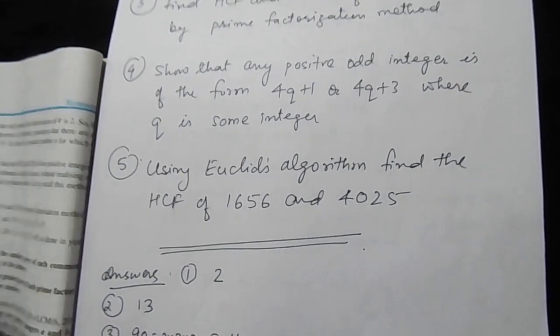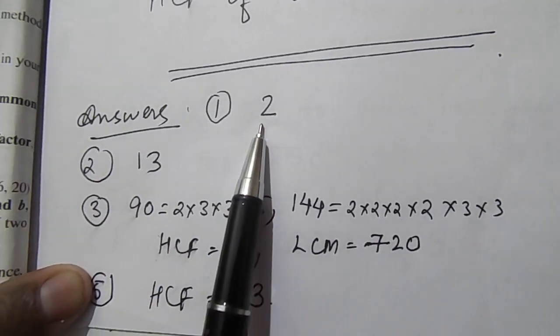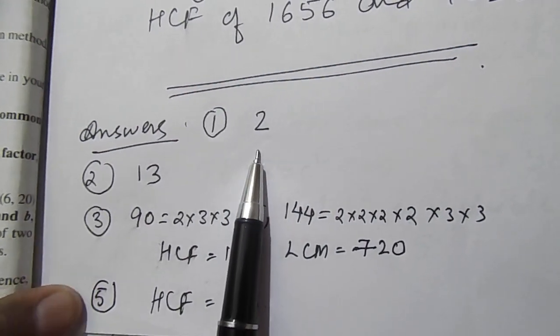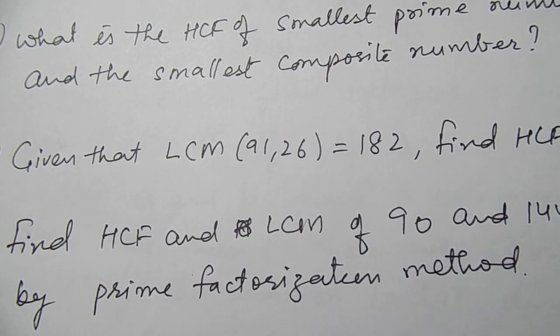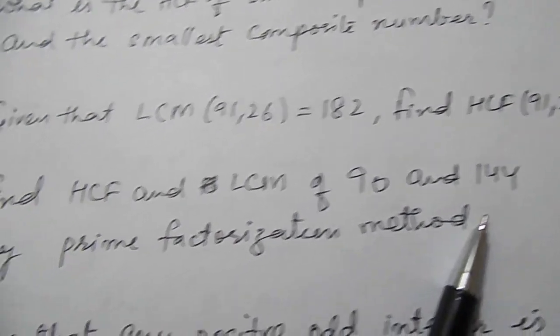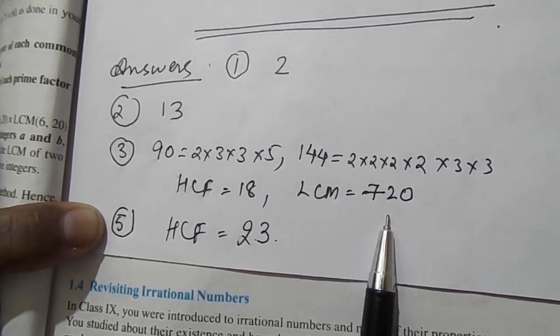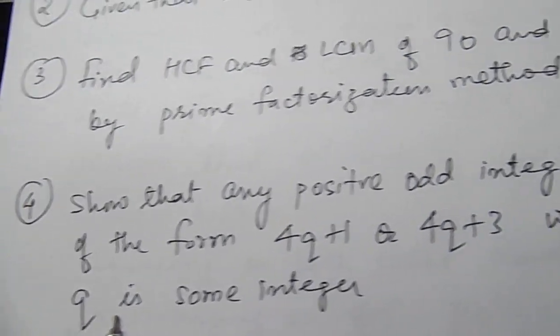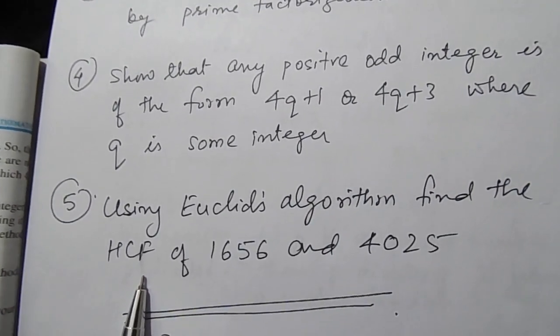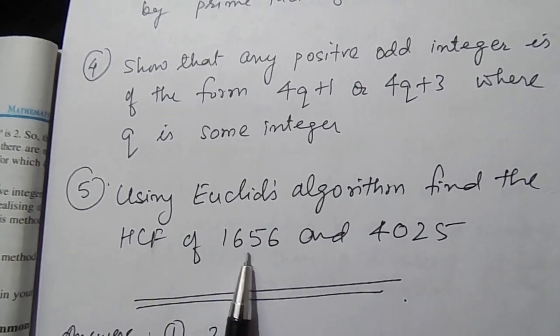The answers to those five questions: Question 1, find the HCF of the smallest prime number and the smallest composite number — the answer is 2. Question 2, HCF of 91 and 26 — the answer is 13. Question 3, HCF and LCM of 90 and 144 by prime factorization — HCF is 18 and LCM is 720. Question 4 you can do yourself. Question 5, using Euclid's algorithm, the HCF of 1656 and 4025 is 23.